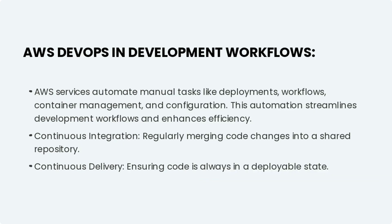AWS services automate manual tasks like deployments, workflows, container management, and configuration. This automation streamlines development workflows and enhances efficiency. Continuous integration involves regularly merging code changes into a shared repository, while continuous delivery ensures code is always in a deployable state.